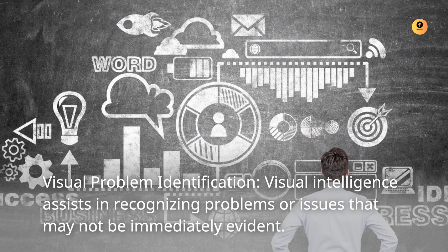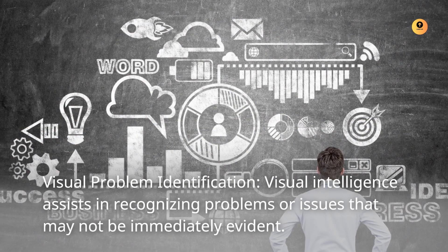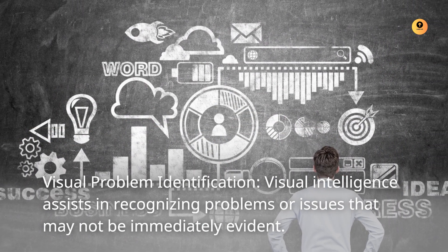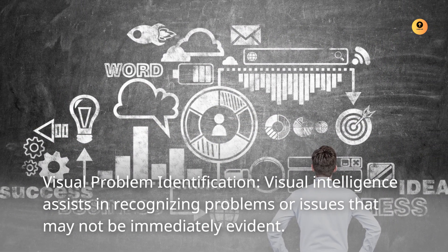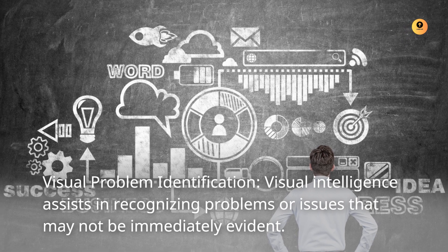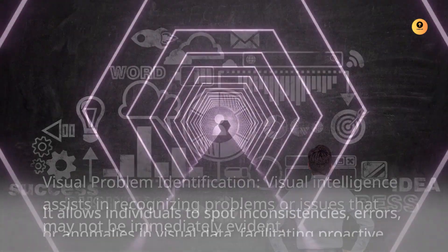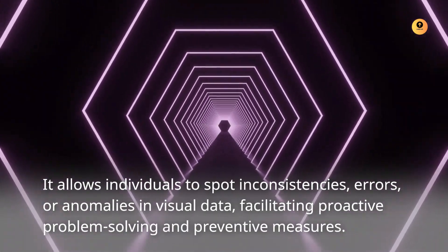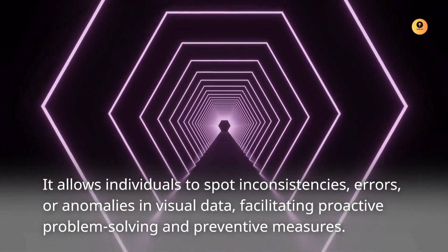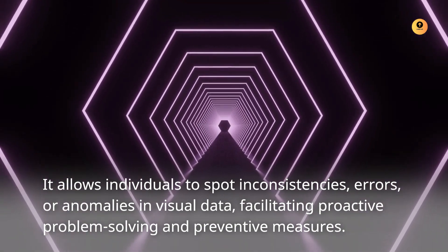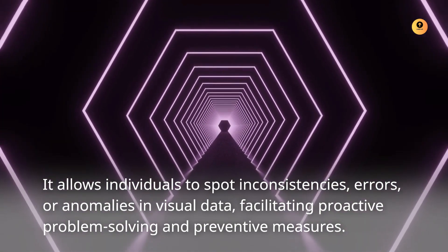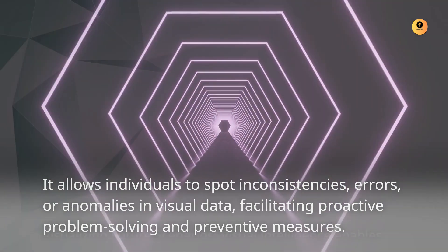Visual problem identification: visual intelligence assists in recognizing problems or issues that may not be immediately evident. It allows individuals to spot inconsistencies, errors, or anomalies in visual data, facilitating proactive problem solving and preventive measures.